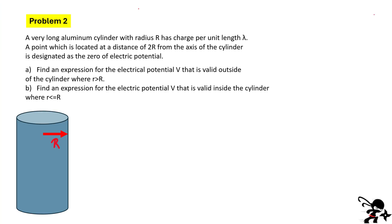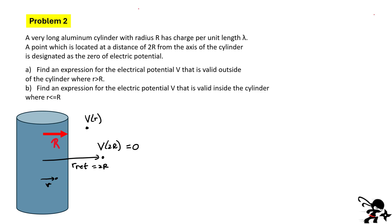Here is problem two. A very long aluminum cylinder with radius R has a charge per unit length lambda. A point located at a distance of 2R from the axis of the cylinder is designated as the zero of electrical potential, so V of 2R equals zero, making R-ref equal to 2R. There are two parts: Part A asks for an expression for the electrical potential V valid when you're outside the cylinder, and Part B asks for the potential valid when you're inside the cylinder.